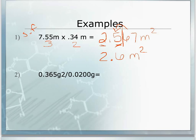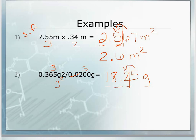In this division problem — note the unit should be grams squared — we have 0.365 grams squared divided by 0.0200 grams. Put that into the calculator and you get 18.25 grams. Looking at the number of sig figs: the first number has three, and the second number also has three — the leading zeros are not significant, they are place-keeping. So we need three sig figs: one, two, three. The five will round the two up, so our correct value is 18.3 grams.